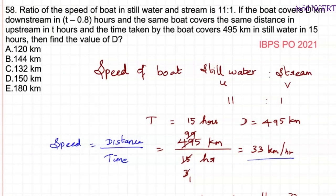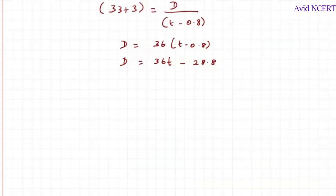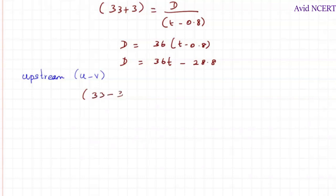The same boat covers the same distance upstream in t hours. For upstream, speed equals u minus v. Speed equals distance by time: 33 minus 3 equals d divided by t, so 30 times t equals d, giving d equals 30t.